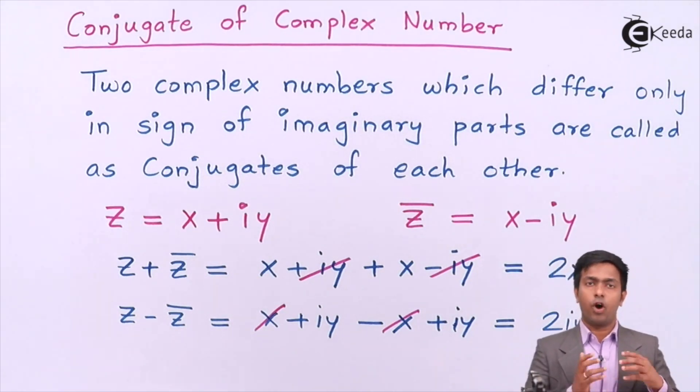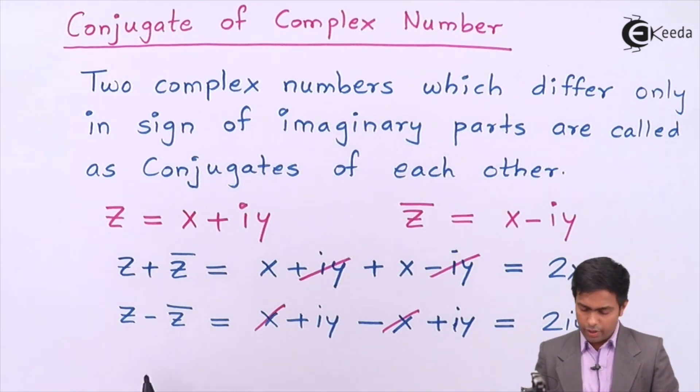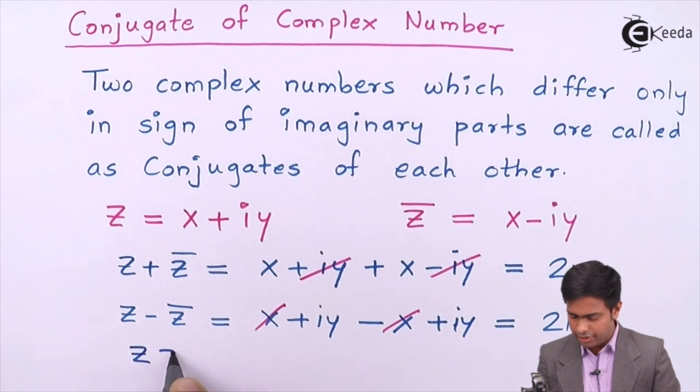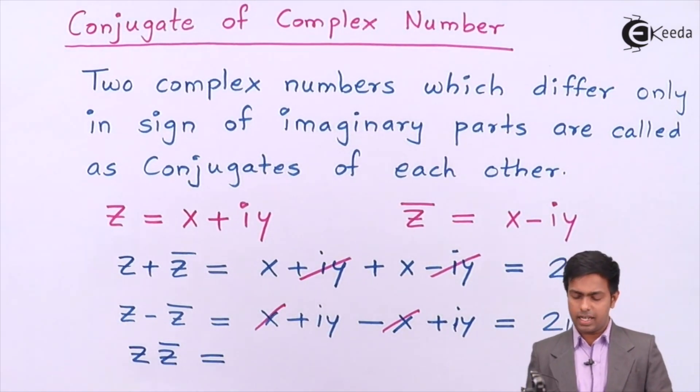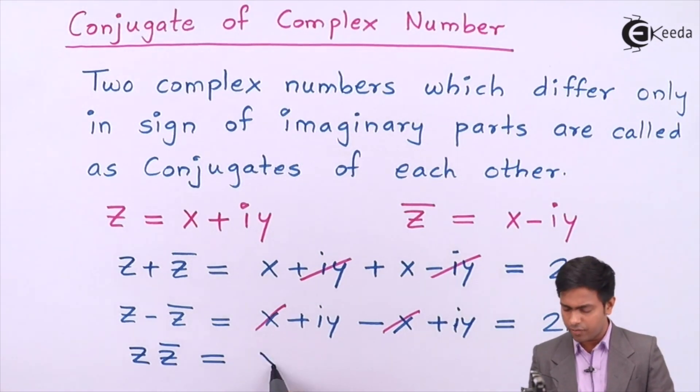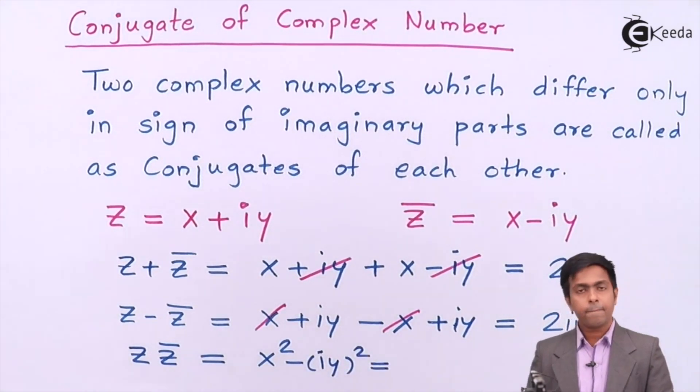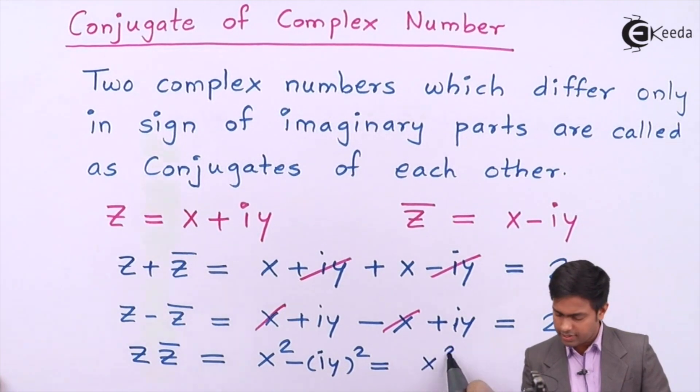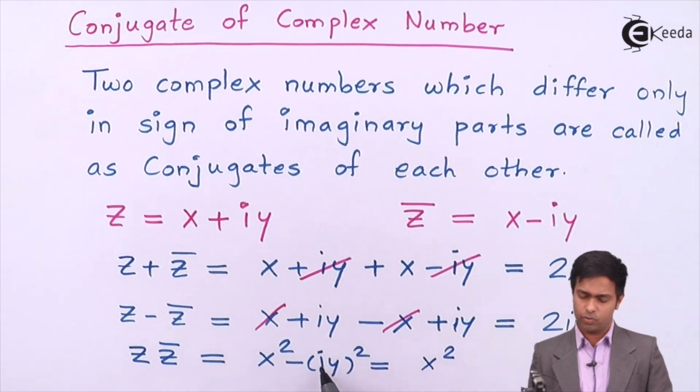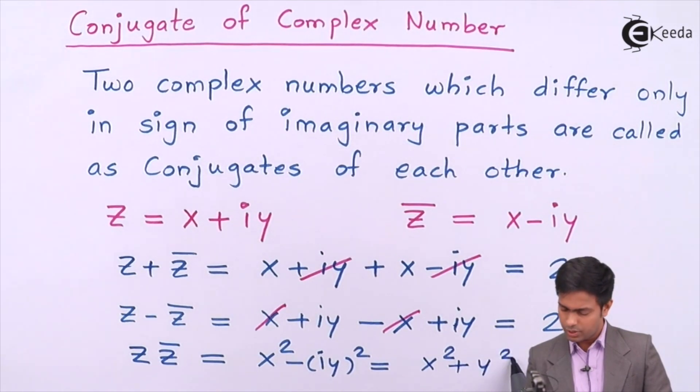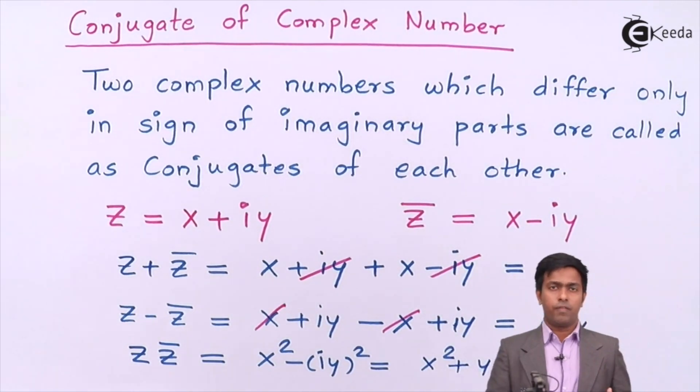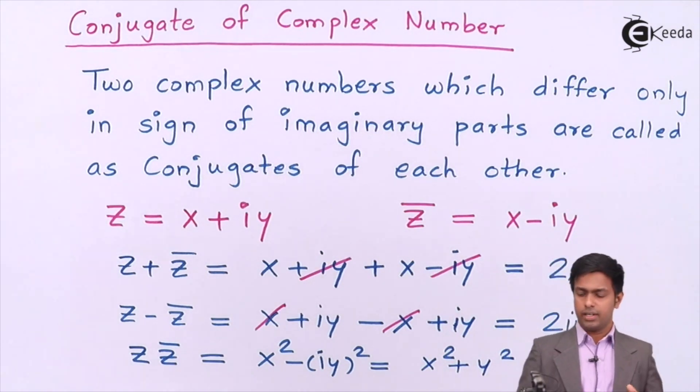Now let's see the product of complex number with its conjugate. If we try to find out z into z̄, it will give us (x + iy) into (x - iy), which will give us x² - (iy)². And this is nothing but x², i² is minus 1, so minus minus plus y². So the product of complex number with its conjugate is equal to x² + y², that is the square of real part plus the square of imaginary part.